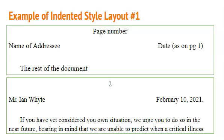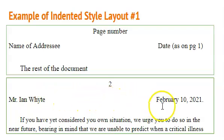The first example: we have the page number, then a double space, with the name of the addressee to the left and the date to the right in the same line. Then a triple space, and then we type the rest of the document. Here is what it looks like — page two, Mr. dot Ian White, and in the same line to the right, the date: February 10, 2021, full stop. Below that, a triple space, then the rest of the document with the paragraph indented.